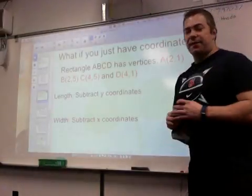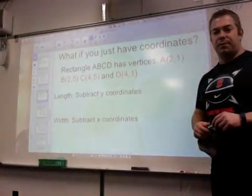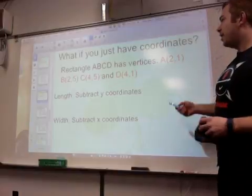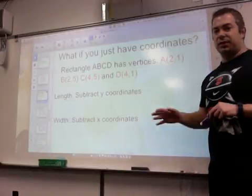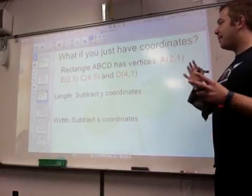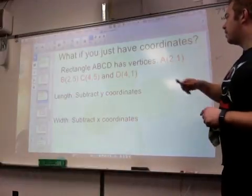So what if you just have the coordinates and they don't give you a picture in the book, which they like to do to you. And you have a rectangle, A, B, C, D. But the problem is I don't know where A, B, C, D is necessarily starting. I don't see it in my head. I might have to draw a picture. But here the vertices are the coordinates.